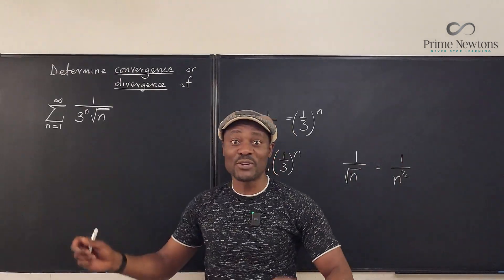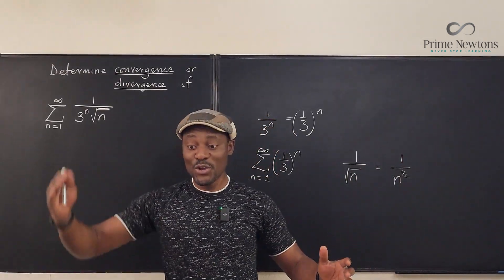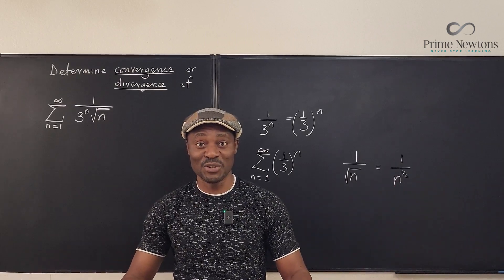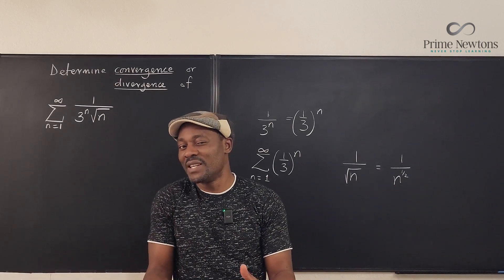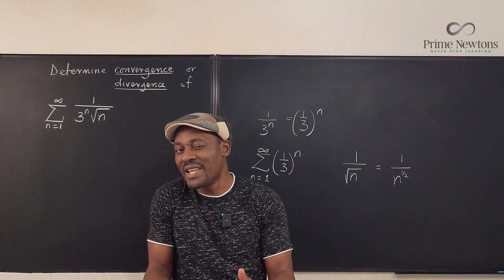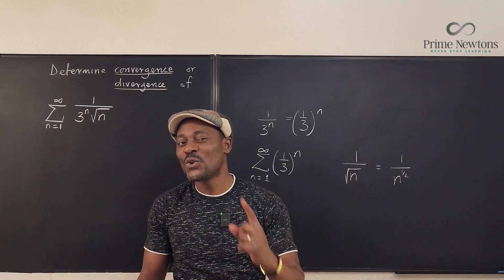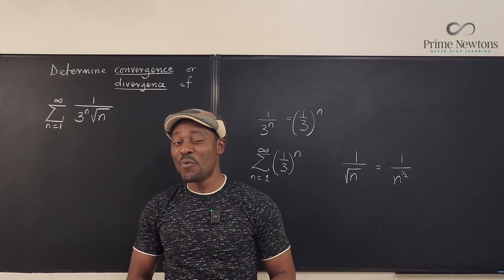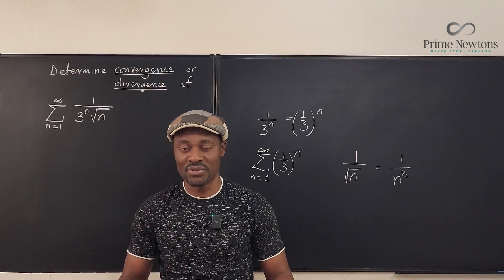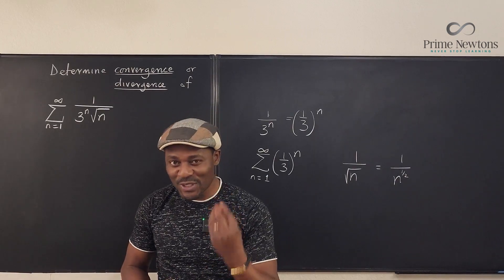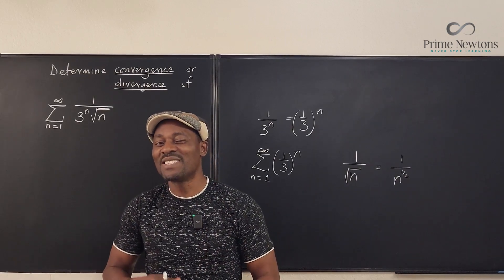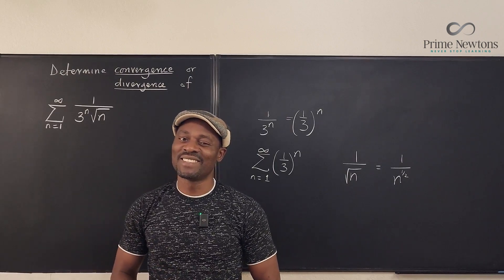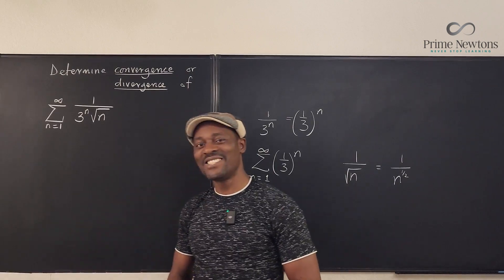So this problem actually brings you something that converges and multiplies it with something that diverges, so you cannot really guess. Whenever you have this kind of combination, you want to do the direct comparison test because that always helps. Let's get into it.